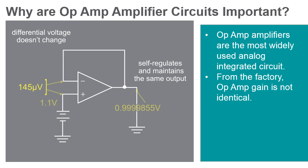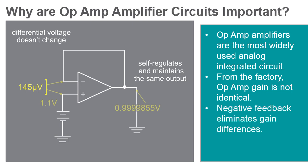An op-amp only amplifies the difference between the inverting and non-inverting inputs. Negative feedback can reduce the difference between them to negligible values. In the circuit shown, for practical purposes, the output voltage is equal to the non-inverting input voltage. The precise op-amp gain does not have to be set by the factory in order to design an amplifier with precise gain. The negative feedback will make the system self-correcting.